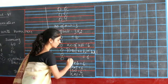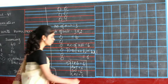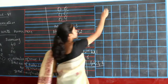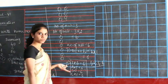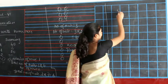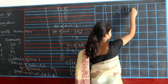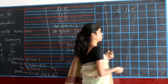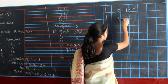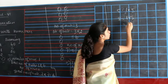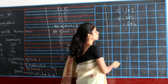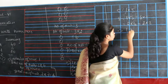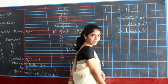So these are called the factors of 6, which are 1, 2, 3, and 6. We can represent all numbers in terms of their factors. For example, if you have 5, you can write 1 into 5 — so 1 and 5 are the factors of 5. If you have 8, you can write 1 into 8 and 2 into 4, so 1, 2, 4, and 8 are the factors of 8.